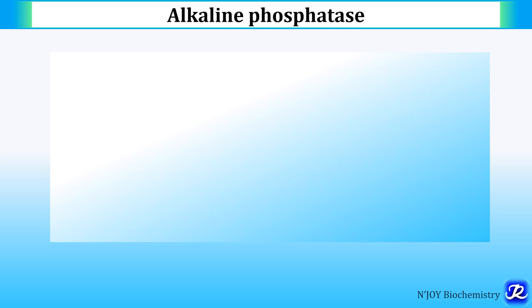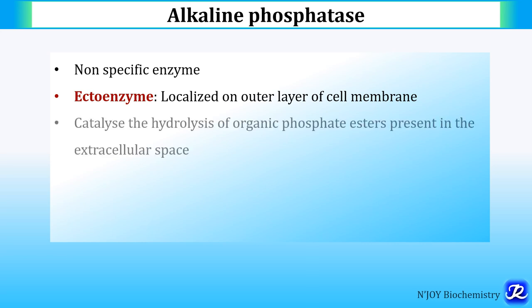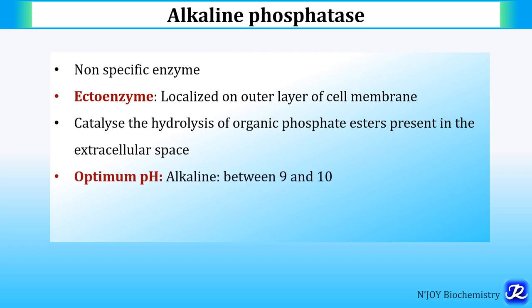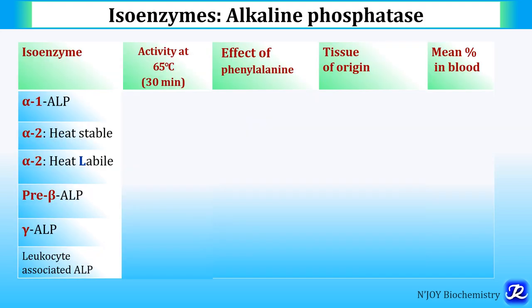Now let's see the isoenzymes of alkaline phosphatase. This enzyme is non-specific and is localized on the outer surface of the cell membrane — that's why it is called an ectoenzyme. It catalyzes the hydrolysis of organic phosphate esters in the extracellular space. It acts at an alkaline pH of 9–10 and is activated by manganese and magnesium; zinc is a constituent of this enzyme.